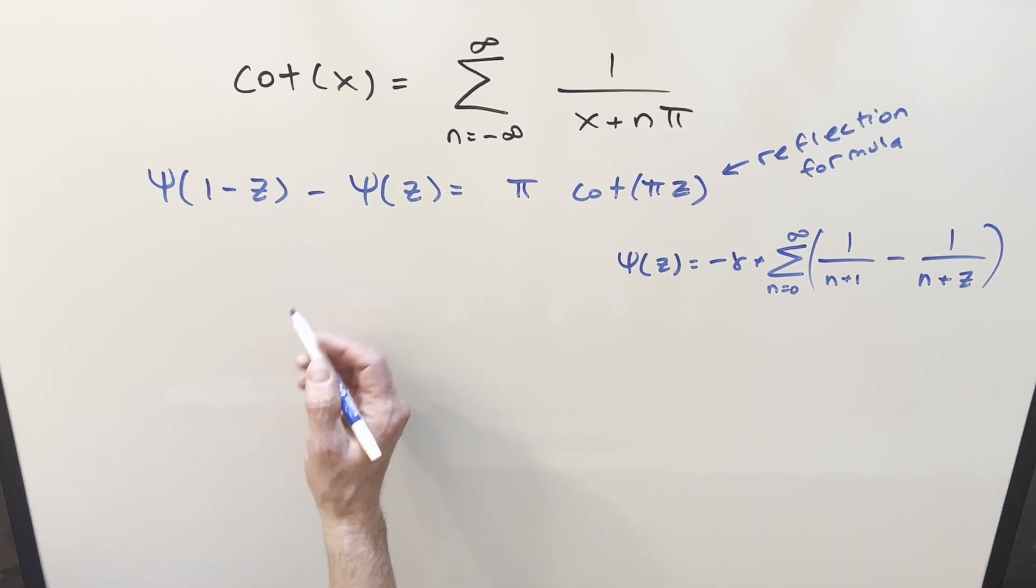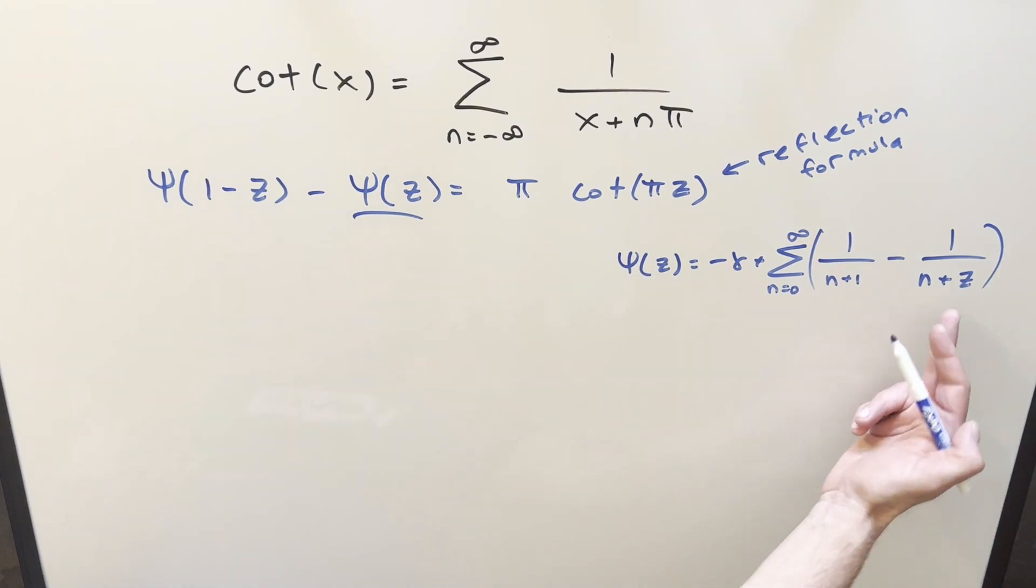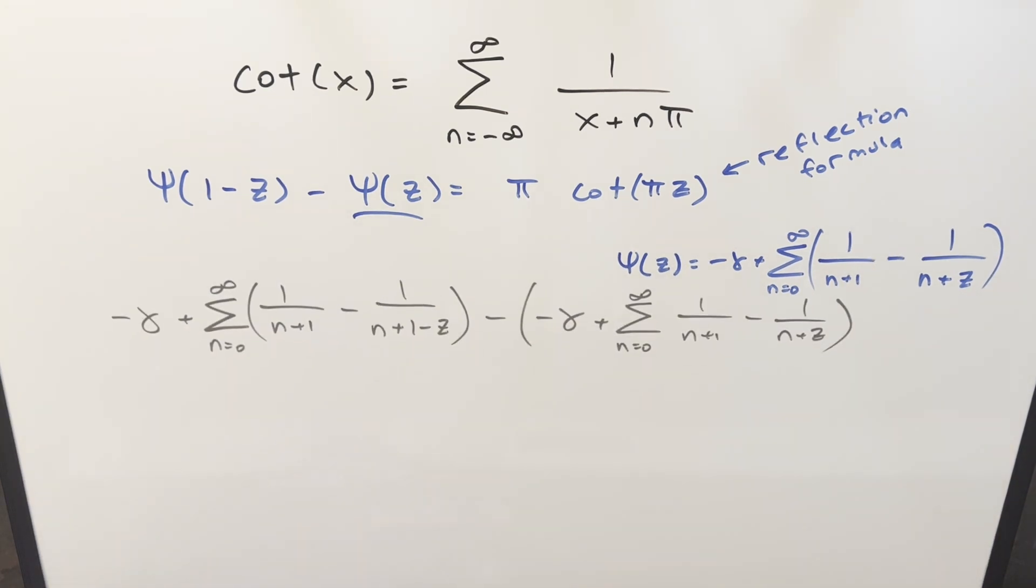So first, this one is exactly this, so we can just plug that in. This one we just need to plug in 1 minus z here. Just focusing on the left side, we've expanded each of these out into the series representation. This thing right here, if you're wondering, is the Euler-Mascheroni constant, somewhere around 0.577.